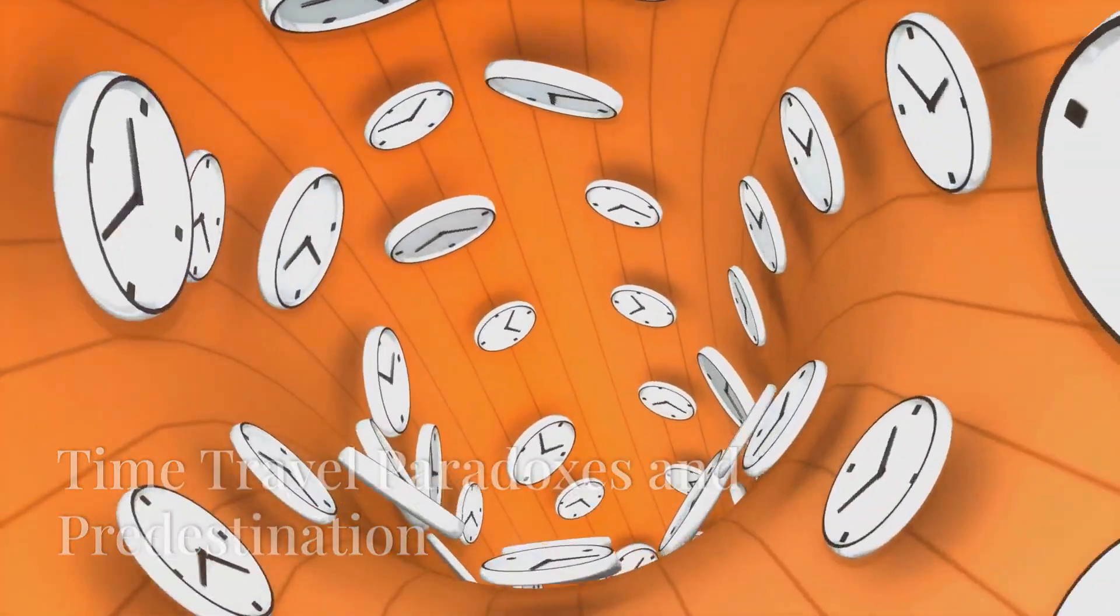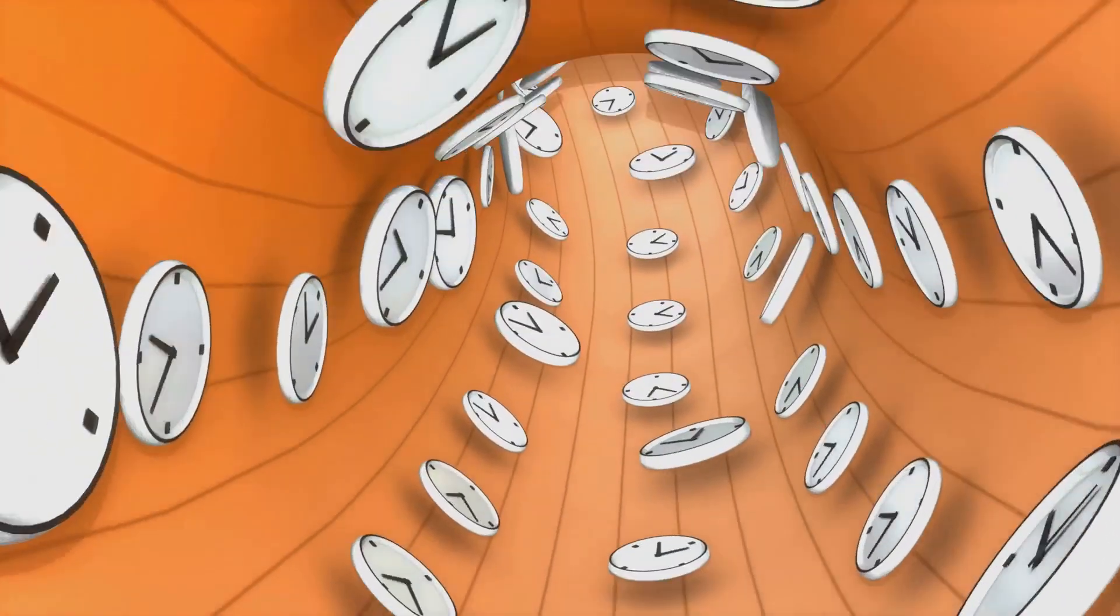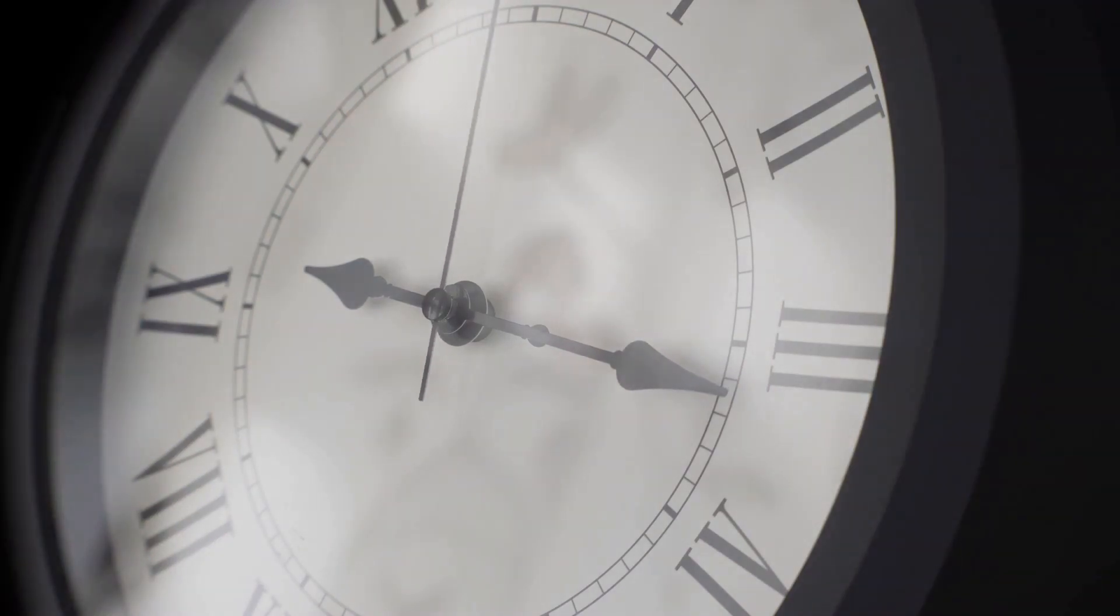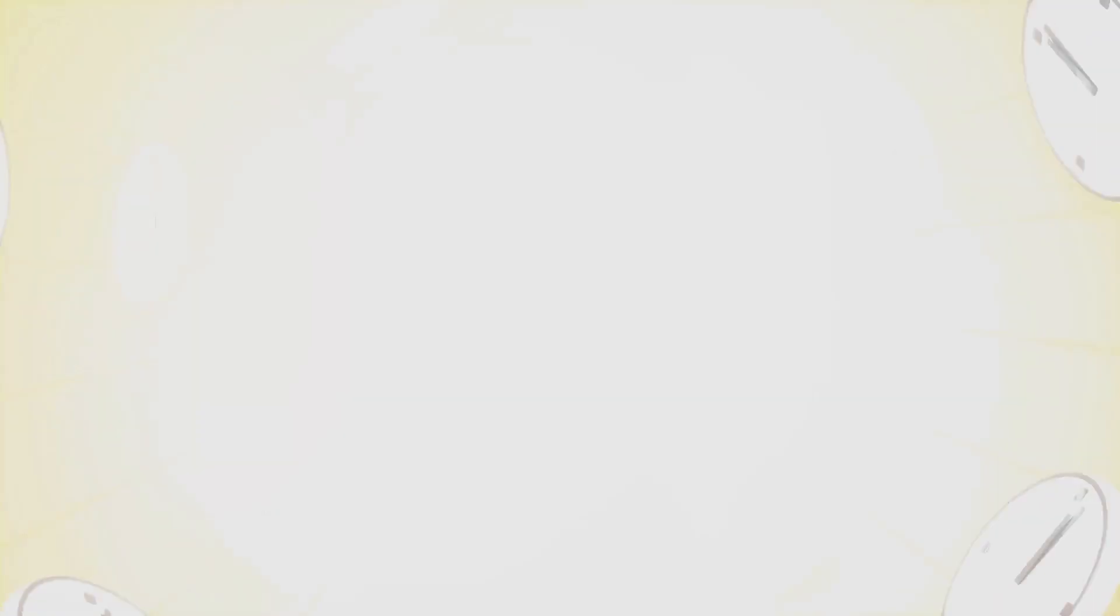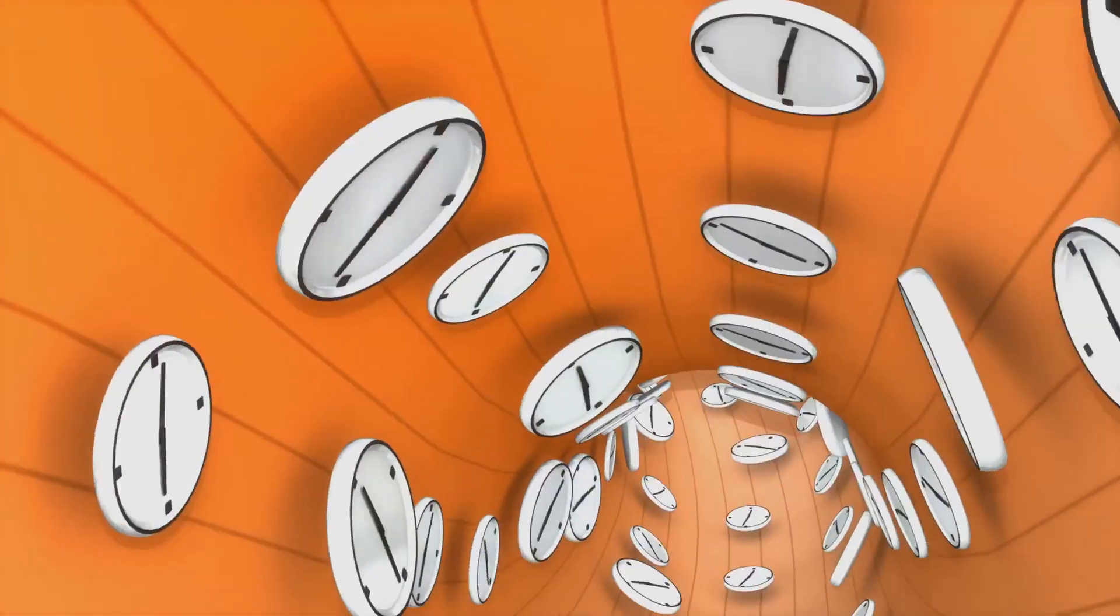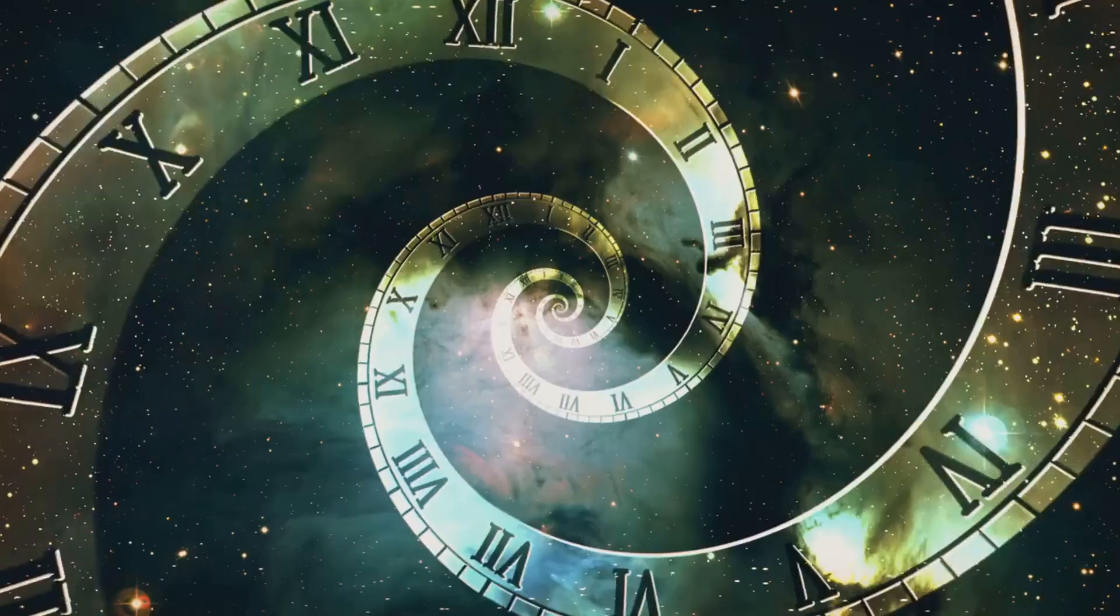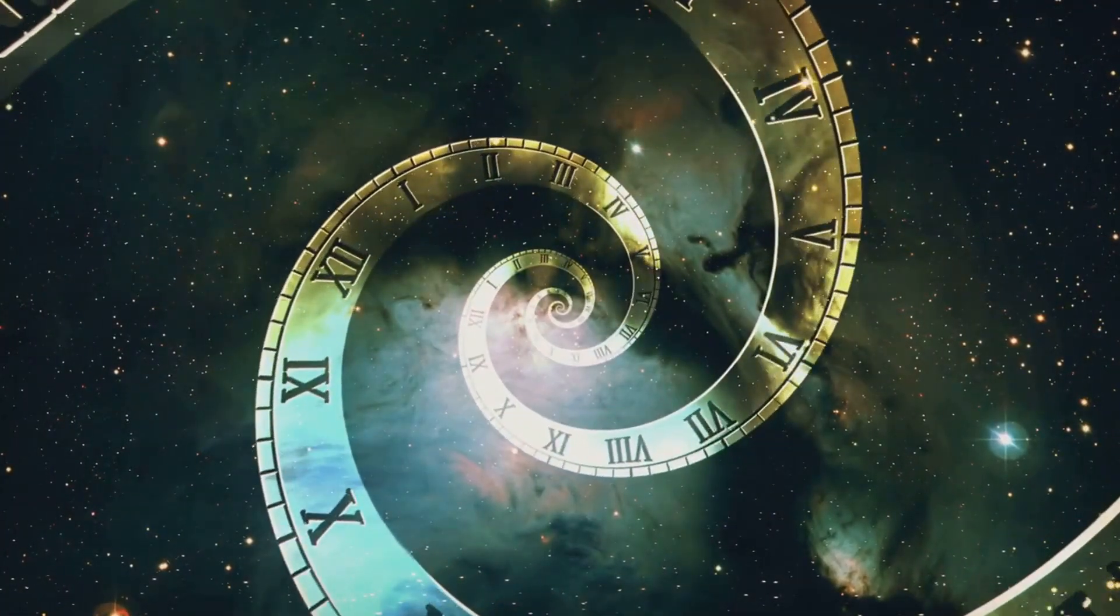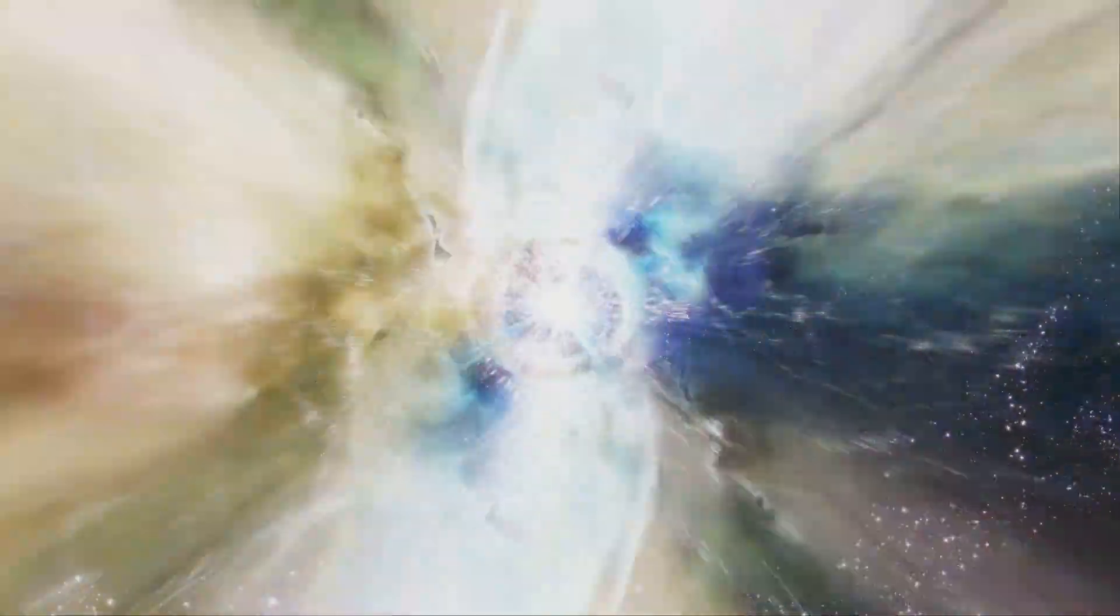The block universe theory offers an intriguing perspective on time travel paradoxes. In a block universe, time travel paradoxes like the grandfather paradox become less problematic. If all moments exist simultaneously, you can't change the past because it's already part of the block. Any action you take in the past would have always been part of the timeline. This leads to the concept of predestination. In a block universe, the future is as fixed as the past. Your future actions are already there in the block, just as your past actions are. This doesn't mean you can't make choices, but rather that your choices are already part of the fabric of space-time.